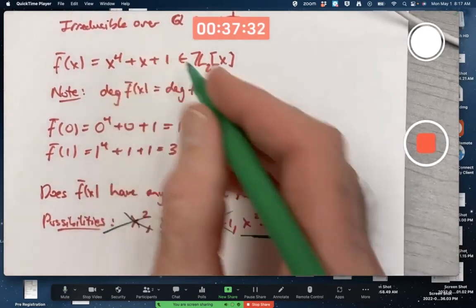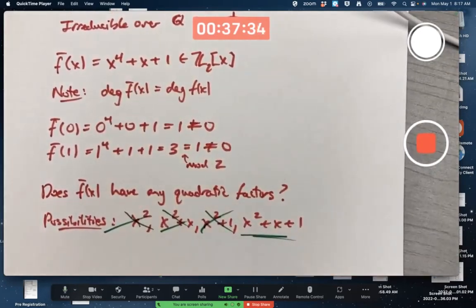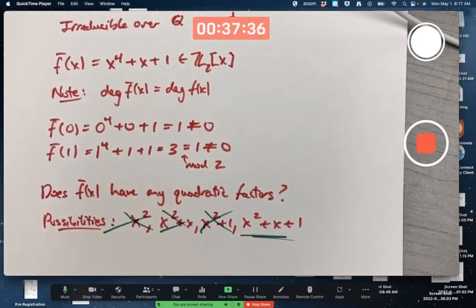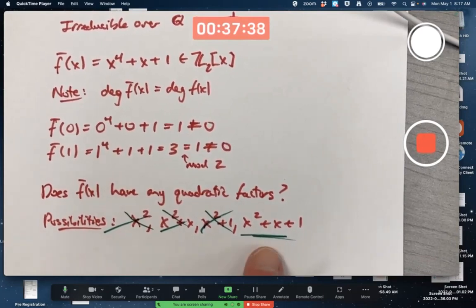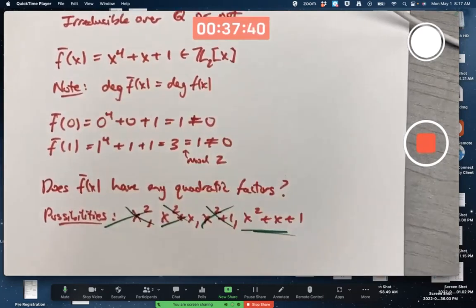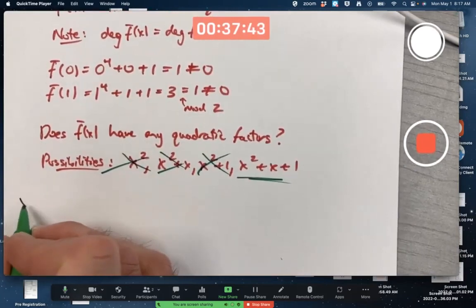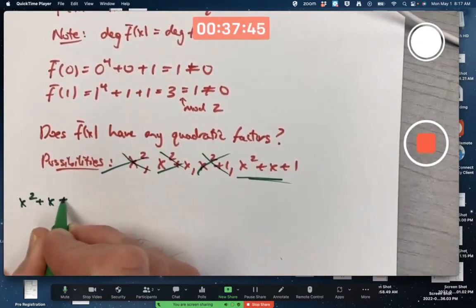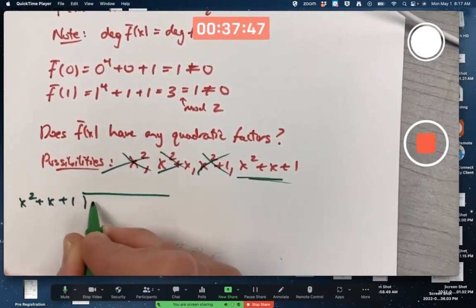Is that a factor of x to the fourth plus x plus 1? You could do this with long division or actually just multiplication. You could try multiplying this thing by itself and seeing if you get this thing. Let's try it both ways. Kind of weird, but we're about to do long division mod 2 with polynomials.